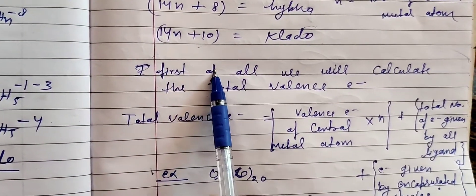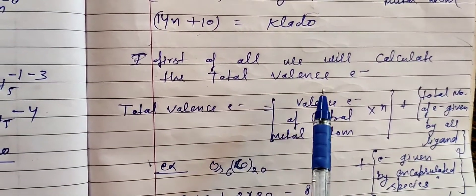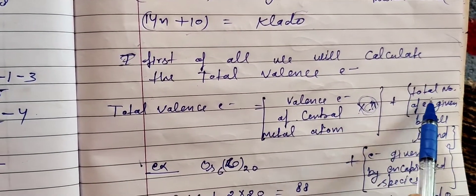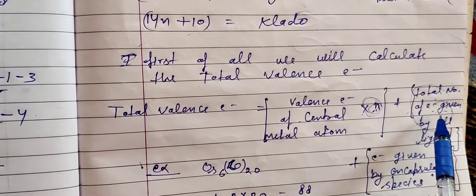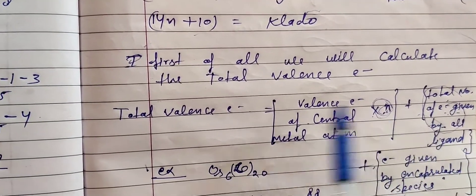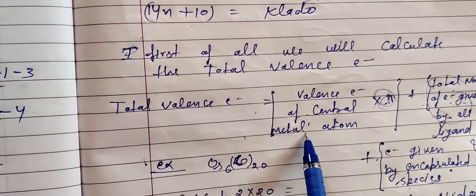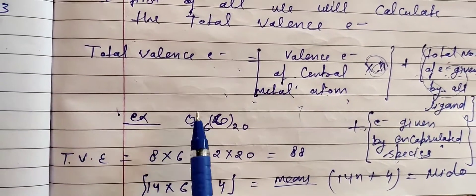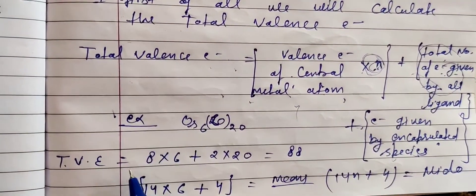To solve second-type questions, first calculate total valence electrons. The formula is: valence electrons of central metal atom × n, plus total electrons given by all ligands, plus electrons given by encapsulated species. Note: electrons in metal-metal bonds are not counted. Example: Os6(CO)20. Osmium has 8 valence electrons, n=6, so 8×6 = 48. Carbonyl (CO) gives 2 electrons each, so 2×20 = 40. Total = 88.